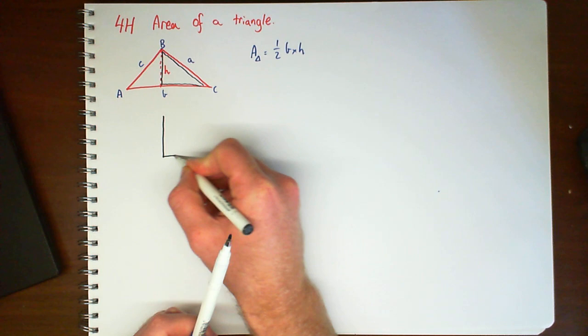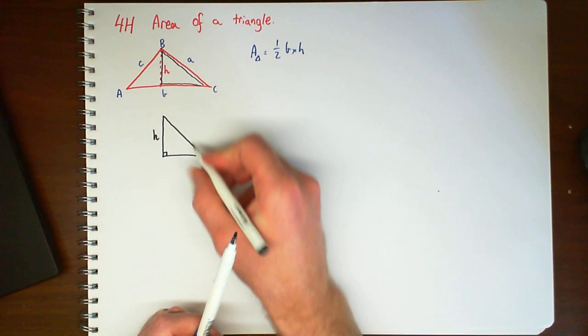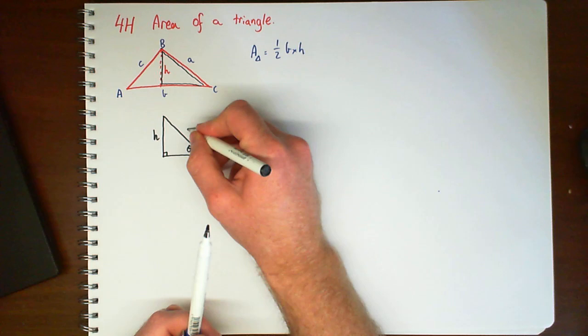we've got a right angle, we've got our height, we've got C as our angle, and we've got A as the side of the hypotenuse.